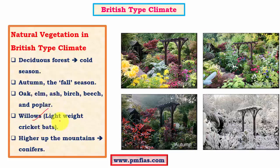Important deciduous trees include oak, elm, birch, and poplar. Oaks are typical to Mediterranean type of climate but some oaks are present in this region as well — they are evergreen in the Mediterranean but not in the British type. Willows are an example of very lightweight hardwood trees, and lightweight cricket bats are manufactured using willows. Willows are also found in parts of the Kashmir region. Higher up the mountains where soil conditions don't suit deciduous forests, we have conifers, which can adapt to extreme cold conditions.